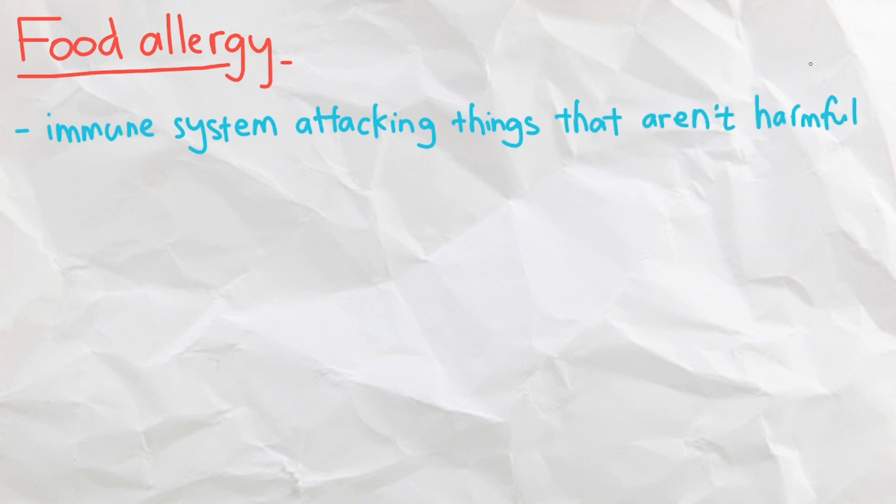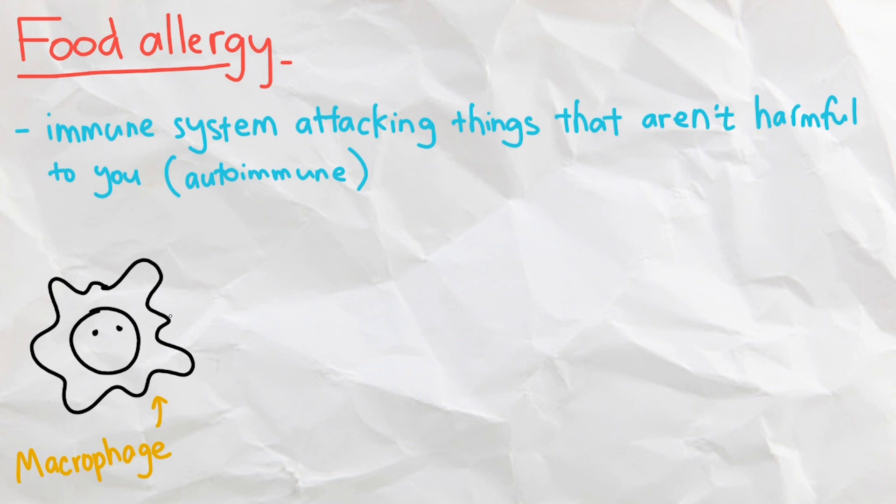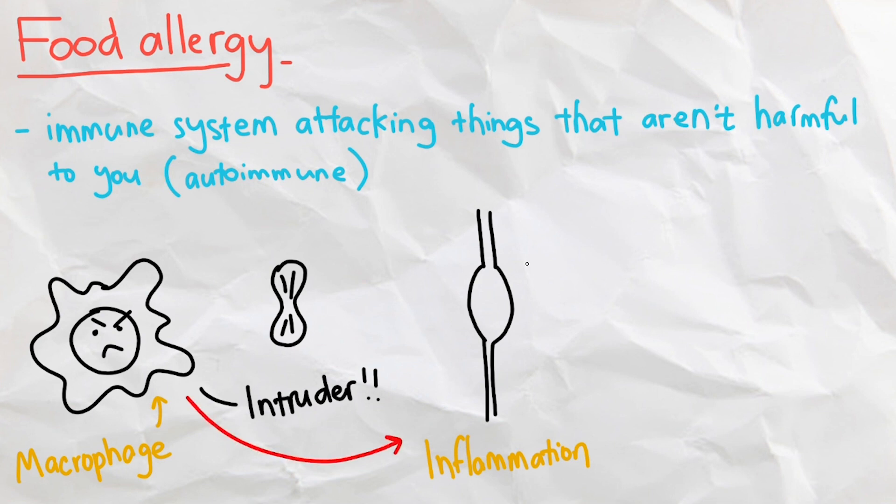Starting off with allergies, which are caused by your immune system attacking things that aren't harmful to you, which is food in the case of food allergies. When the immune system detects the presence of, say, a peanut, they will trigger immune responses, one of them being inflammation and swelling of blood vessels. This is why some people have difficulty breathing after eating food they're allergic to, since their throat and airway may swell up due to this inflammatory response.